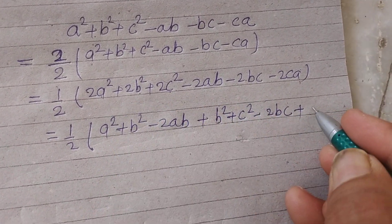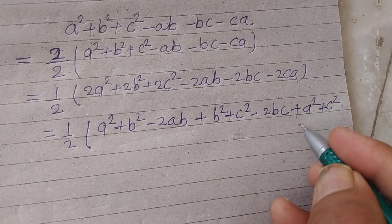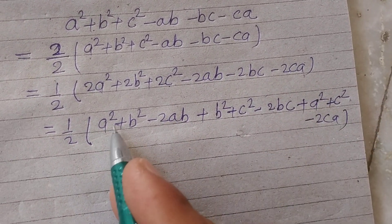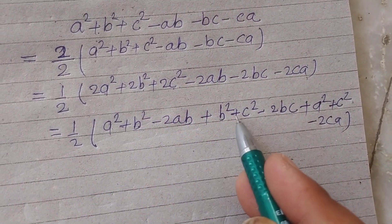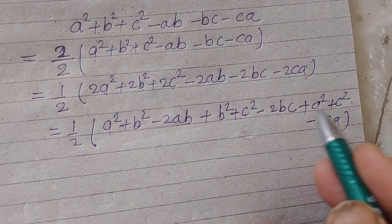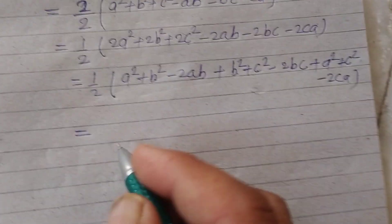Now a² from this and c² from this minus 2ca. So a² + a² is 2a², b² + b² is 2b², c² + c² is 2c² and this is present here. Okay.